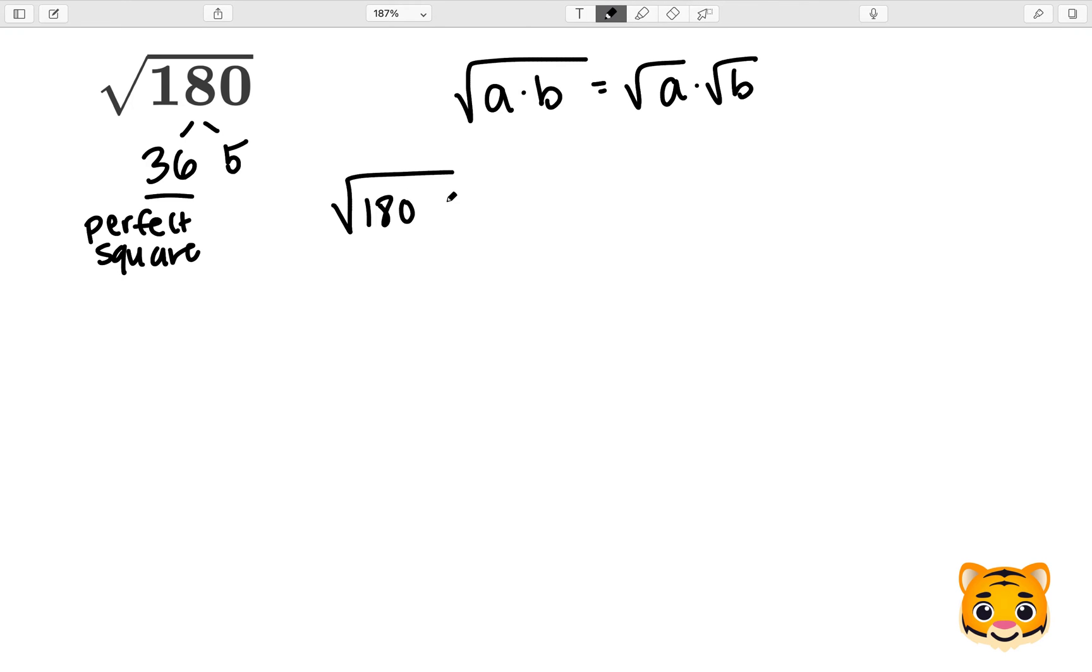Now we can rewrite the square root of 180 as the square root of 36 times 5. Now we can use our math rule we just established to write this as the square root of 36 times the square root of 5. Because 6 times 6 gives us 36, we can rewrite the square root of 36 as 6. And now we will have our simplified answer which is 6 times square root of 5.